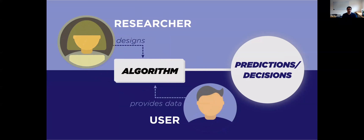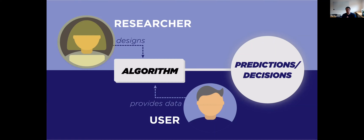We need to make machine learning systems that make it easier for the user of the algorithm to enforce safety or fairness constraints. The goal is to shift this burden from the user to the designer of the algorithm, so that ensuring the system is safe becomes the job of the machine learning researcher creating the algorithm, not the person applying it.